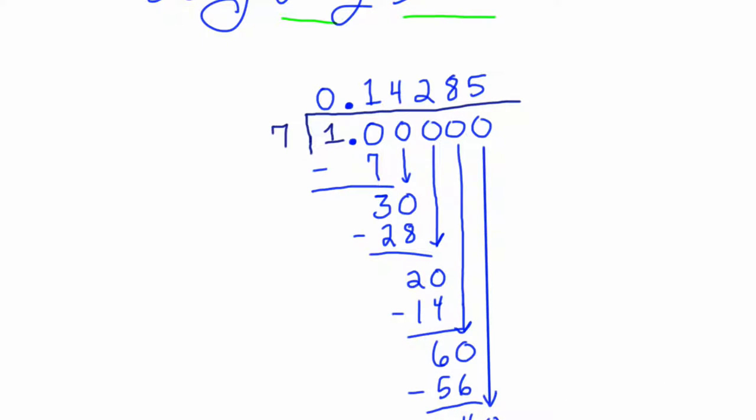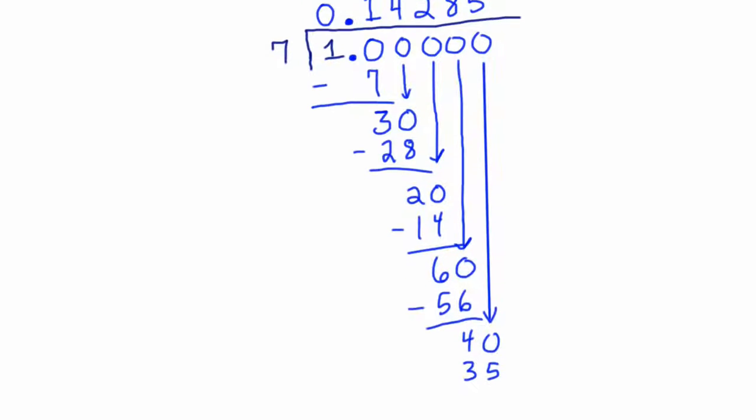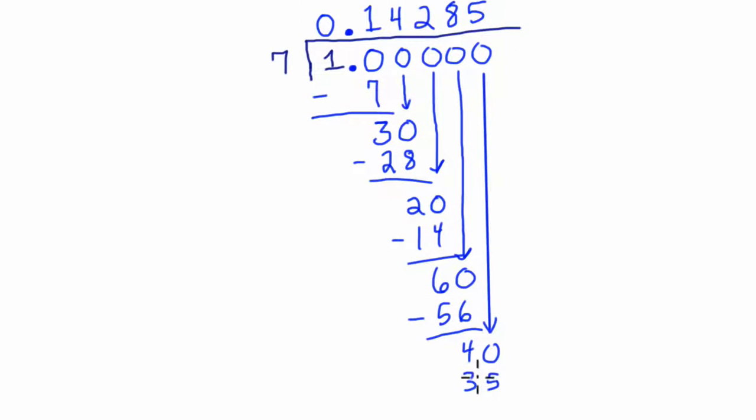And even though I'm going to feel like it, we actually are getting somewhere here. Okay. Well, 40 minus 35 is 5. And again, we're carrying our 0s down.